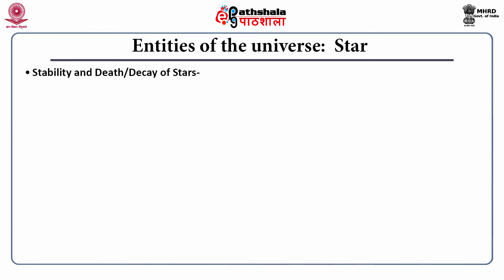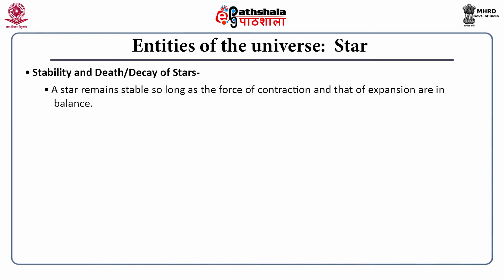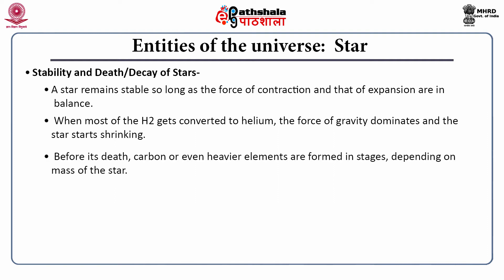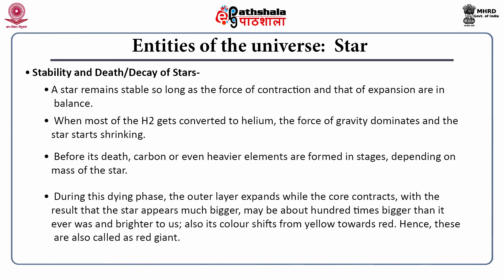A star remains stable so long as the force of contraction and that of expansion are in balance. When most of the hydrogen gets converted into helium, the force of gravity dominates and the star starts sinking. Before death, carbon or even heavier elements are formed in stages depending on the mass of the star. During this dying phase, the outer layer expands while the core contracts, making the star appear much bigger — maybe about 100 times bigger and brighter — and its colour shifts from yellow towards red. Hence, in this phase, the stars are called red giants.